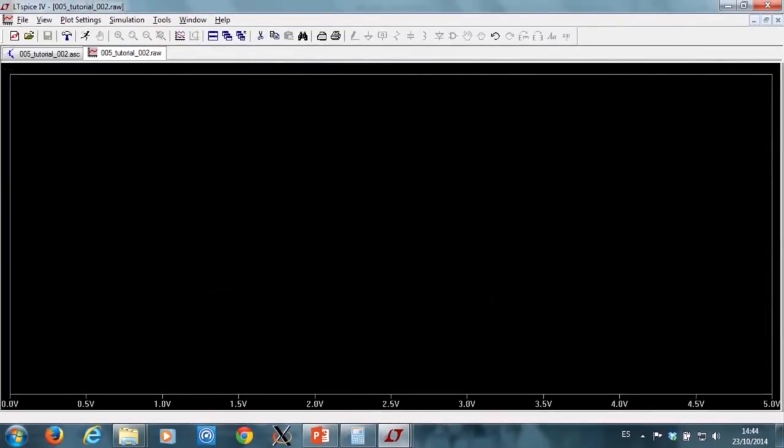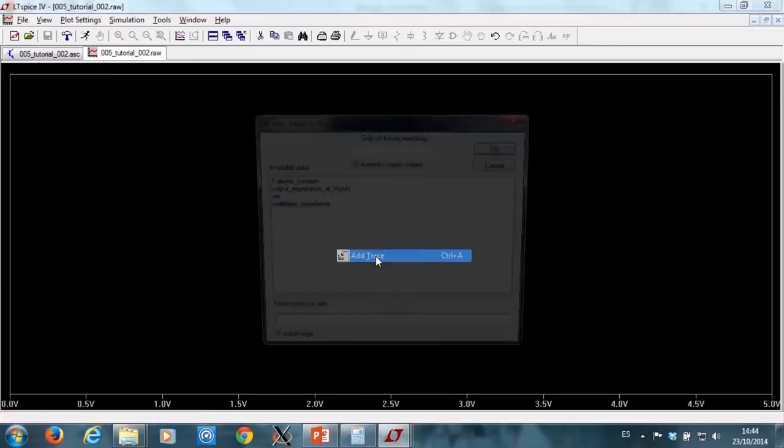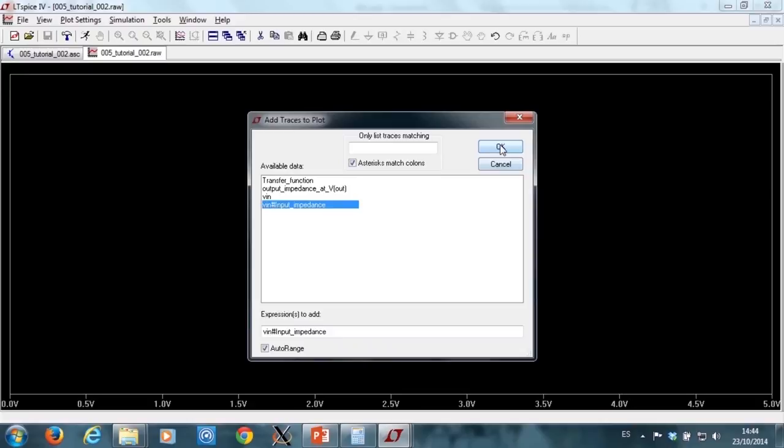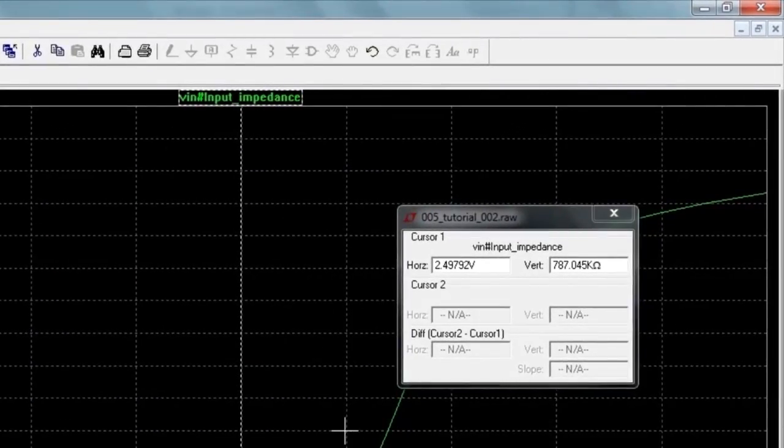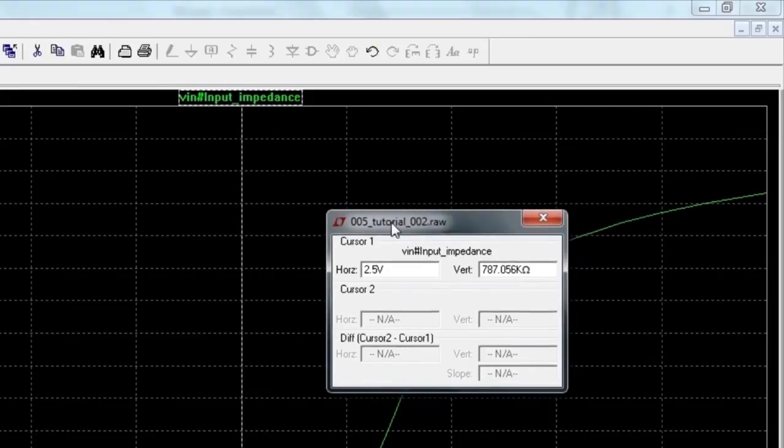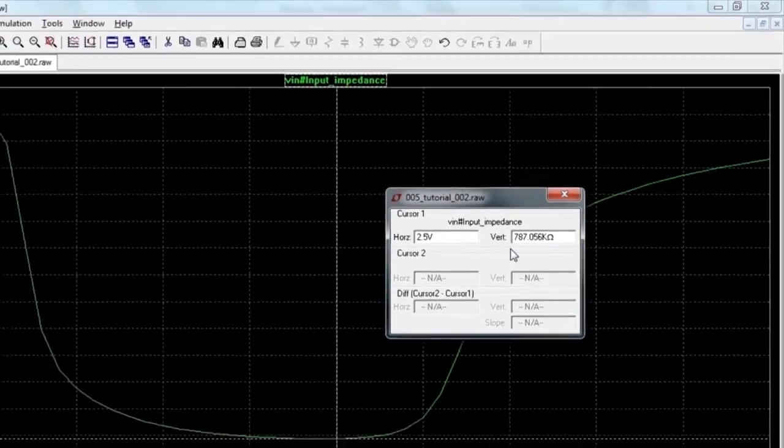Let's see the input resistance now. I plot the input impedance, and I am interested in computing the input impedance at 2.5 volts. I can see that with this bias, my input resistance is 787 kilo ohms, so larger than my estimation.